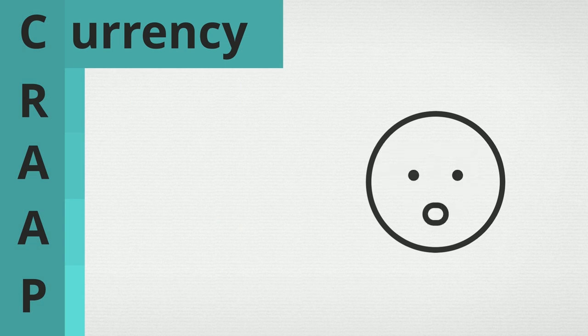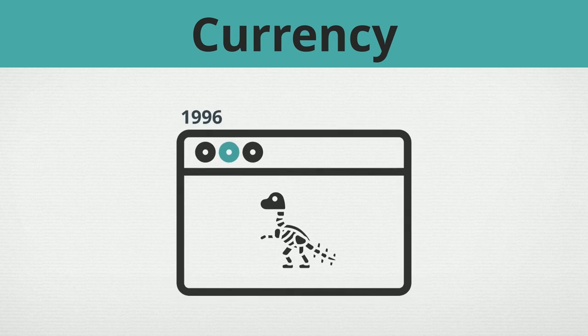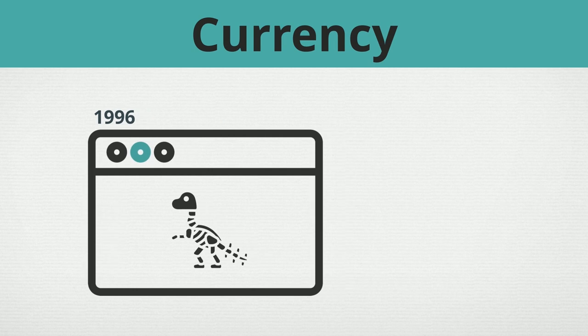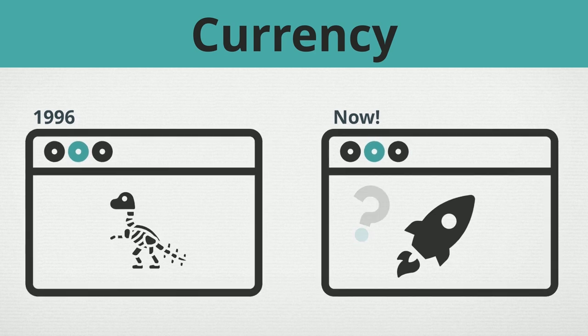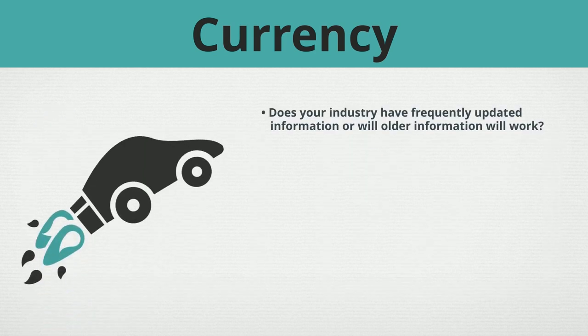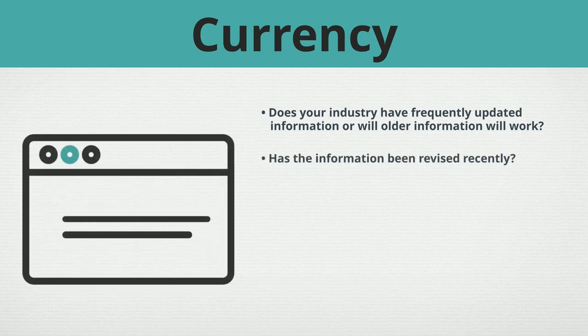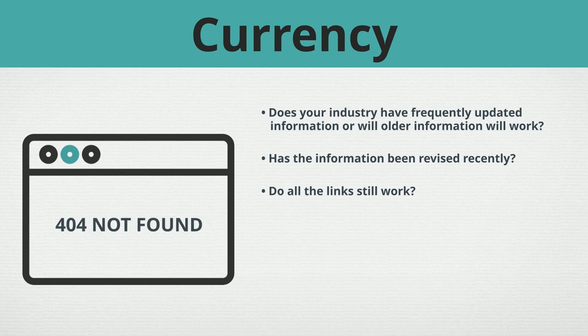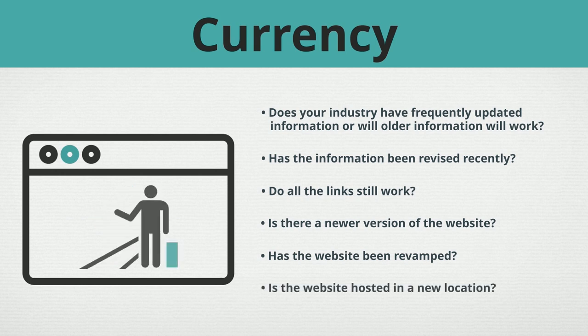Currency. Not that kind of currency. In this case, currency refers to how timely the information is. After all, would you rather get your health news from a website that hasn't been updated since 1996, or would you rather get your information from a source that's a bit more recent? Ask yourself: are you in a fast-paced industry where cutting-edge information is always being updated, or will older sources work just as well? Has the information been revised recently? If it's a website, do all of the links still work? Is there a newer version of the website? Has it been revamped, or is it hosted in a new location?